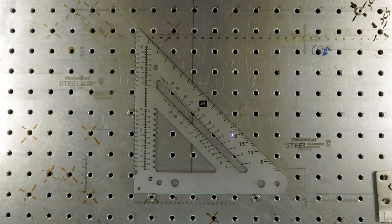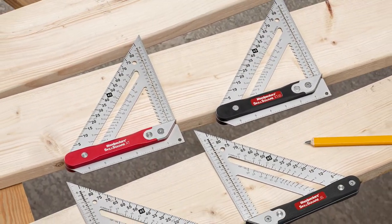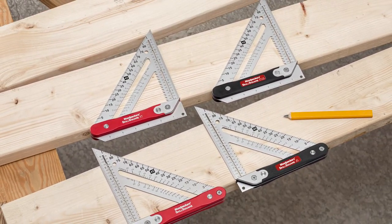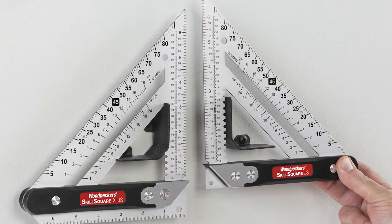The Skill Square combines the features of the traditional carpenter square with Woodpecker's precision machined stainless steel blades and separately machined beam. Here's a look into how they're made.